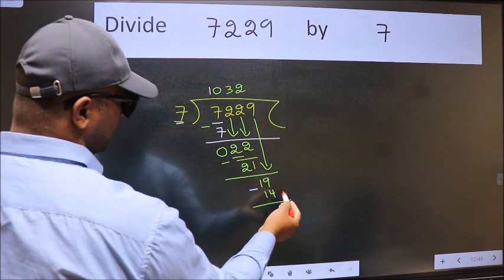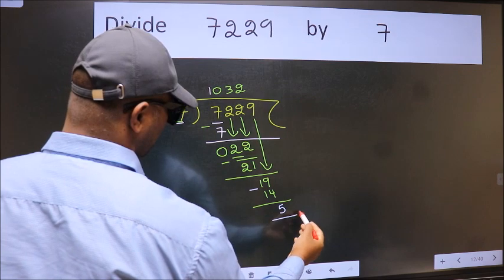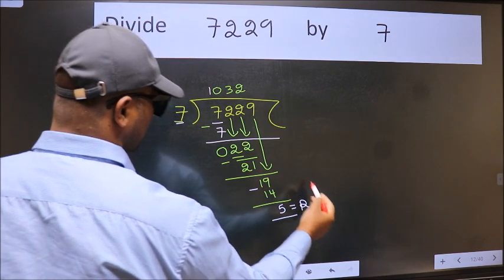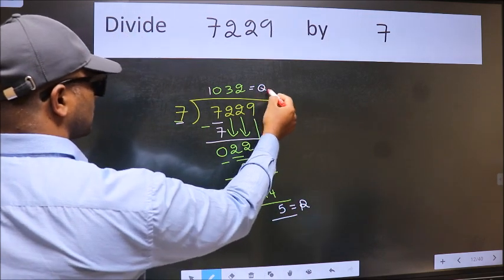No more numbers to bring down, so we stop here. This is our remainder and this is our quotient.